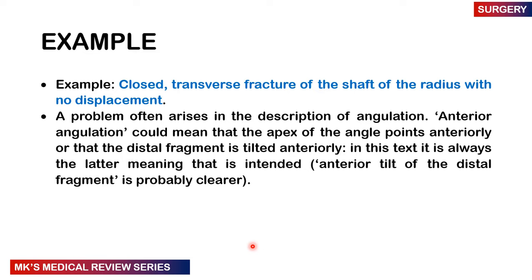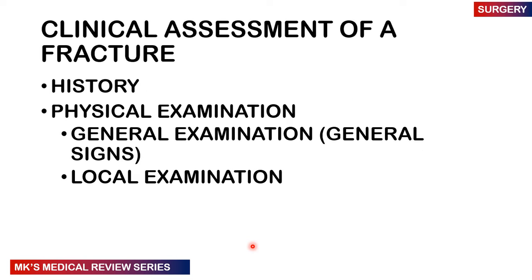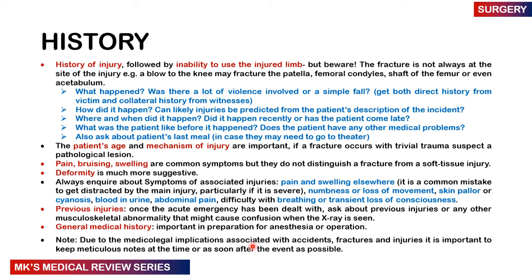When describing angulation, anterior tilt means the distal fragment is pointing anteriorly, as opposed to the apex of the fracture. For clinical assessment, we take a history and do a physical examination. On history, you want details of the injury or what led to it. The fracture is not always at the site of injury — for example, someone hits the knee and the fracture may happen at the patella, femoral condyles, shaft of the femur, or even the acetabulum.